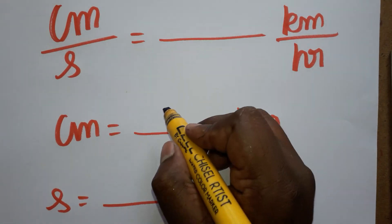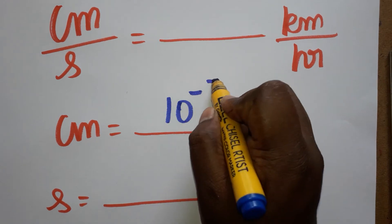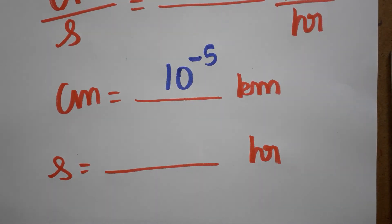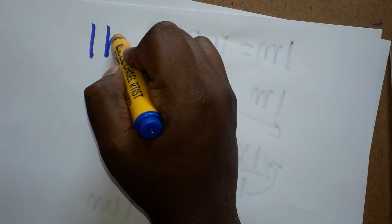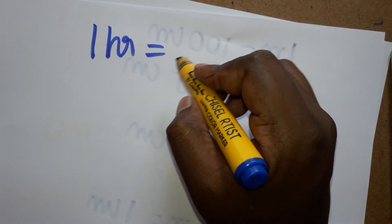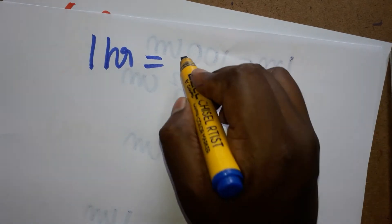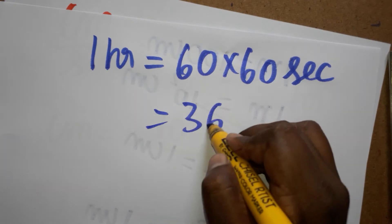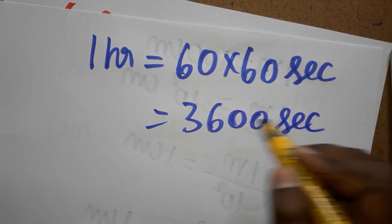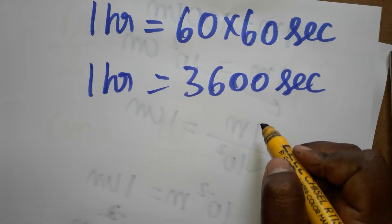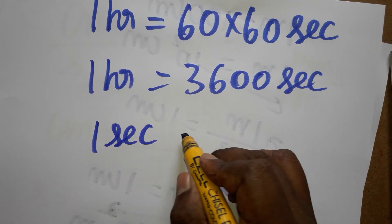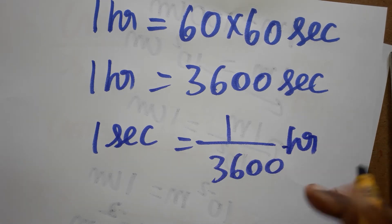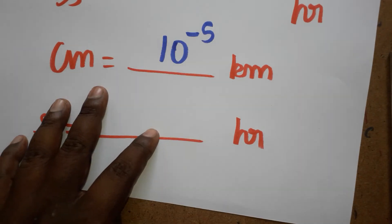Now, one second is equal to how many hours? First, one hour is equal to 60 minutes, and 60 seconds each, so 60 into 60 seconds equals 3600 seconds. So one hour equals 3600 seconds. Therefore, one second is equal to 1 divided by 3600 hour. We now have both conversions.